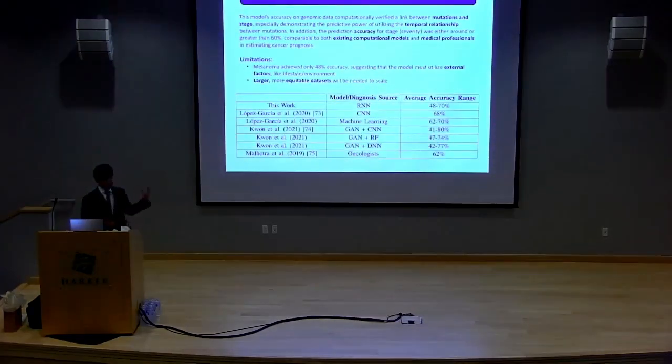So as for a discussion, a comparison to current models, even though RNN is a relatively simple model, by analyzing these mutation progression sequences, for the prediction of prognosis and stage, it's actually as accurate as cutting edge models, such as those predicted by Kwon et al. that are more than 50 times more complex than the model I use. And even compared to oncologists, it points to the fact that this could be a useful tool for evaluating disease progression.